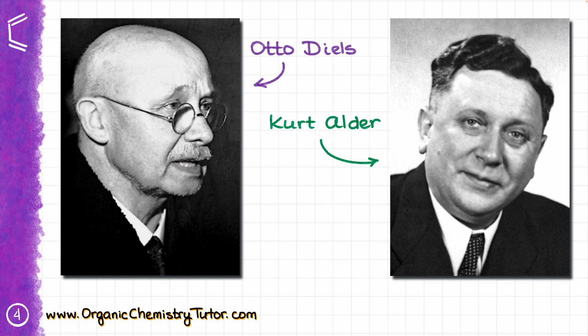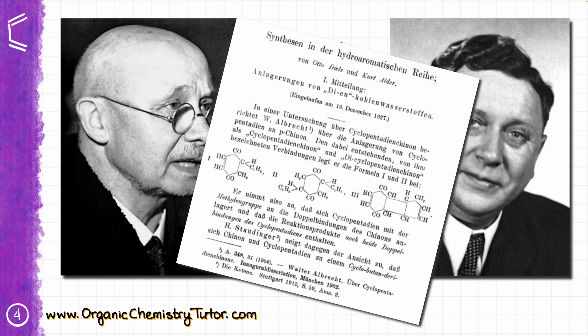The Diels-Alder reaction was initially reported by Otto Diels and his doctorate student Kurt Alder in their 1928 paper, and it quickly captured the hearts and minds of the organic chemistry community due to its versatility and unmatched ability to create cyclohexenes with a bunch of substituents sitting on them.